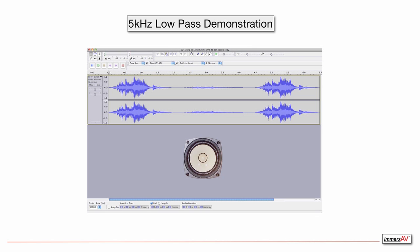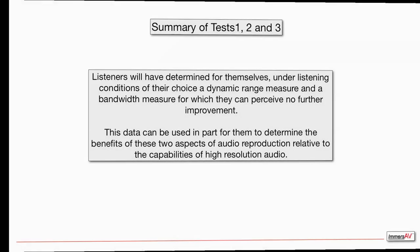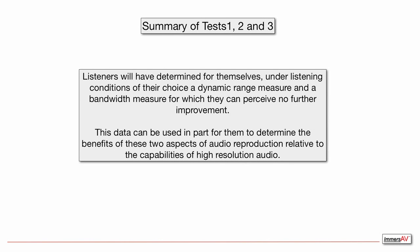To summarize what we've covered so far: by using these three tests — one, two, and three — listeners will have determined for themselves, under listening conditions of their choice, a dynamic range measure and a bandwidth measure for which they can perceive no further improvement. They can use this data to help determine the benefits of these two aspects of audio reproduction relative to the claimed capabilities of high resolution audio.